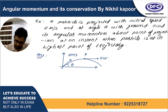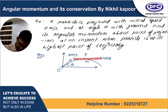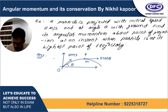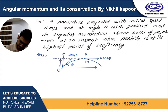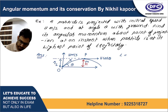For a particle of mass m, we ask angular momentum about the origin, which is the point of projection. We need the velocity line of action and the perpendicular distance from it. The perpendicular distance can be found — it is the maximum height of the projectile motion.